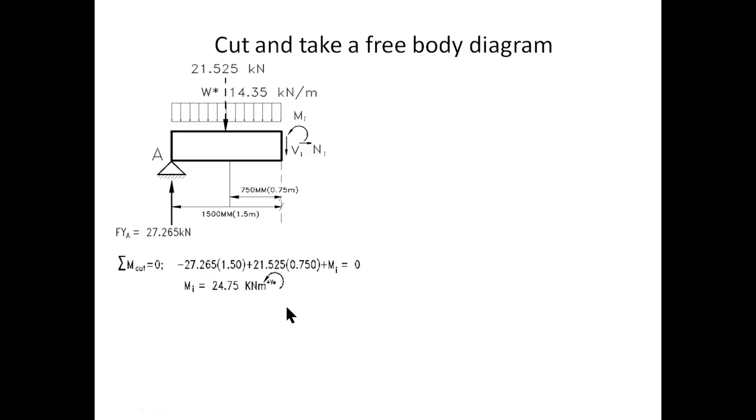Now we will take sum of forces in the Y is equal to zero. We have 27.265 going up minus 21.525 minus VI. Therefore VI is equal to 5.74 kilonewton. And that the sign convention again is correct so VI internally is downwards. Sum of forces in the X is equal to zero. Therefore NI the normal force is equal to zero.